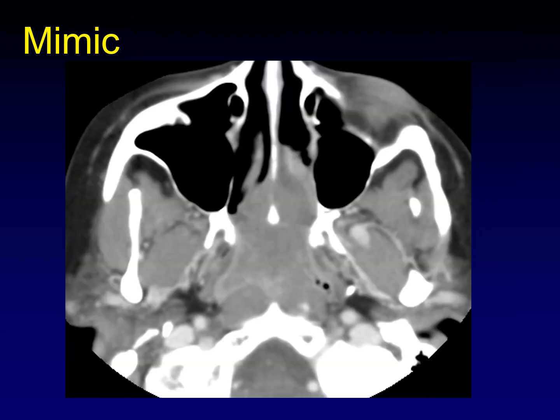Here's a mass filling the nasopharynx and extending forward into the nasal cavity. You might think nasopharyngeal carcinoma, still T1 since we allow for extension into the nasal cavity. But this is actually less destructive than you might imagine — very well behaved for the size of the lesion — because it's not nasopharyngeal carcinoma. This is lymphoma arising in the adenoids and filling up the nasopharynx — another potential mimic.